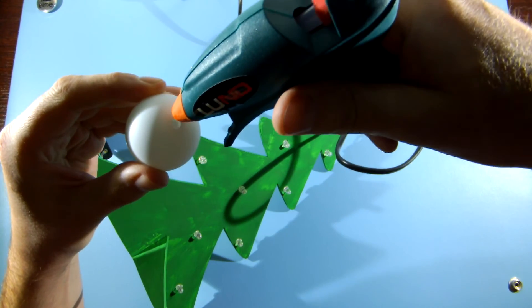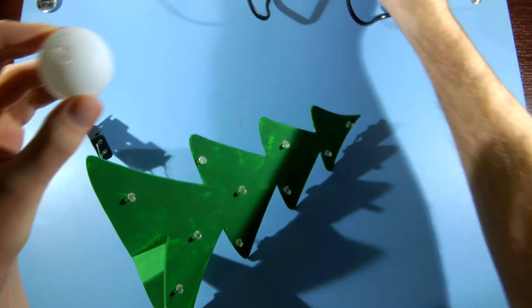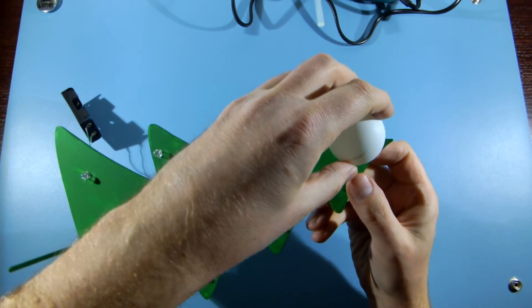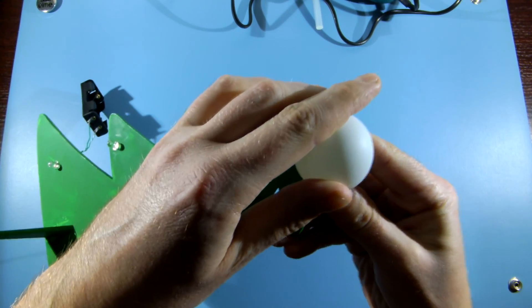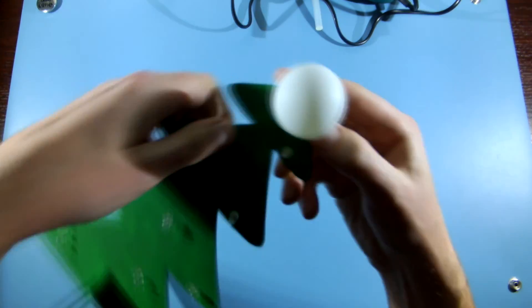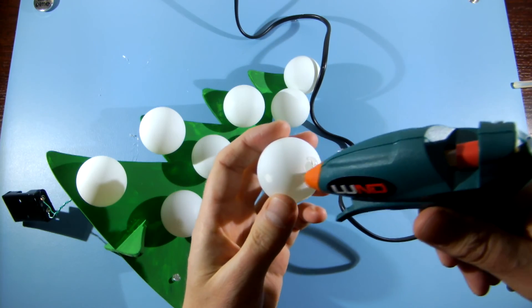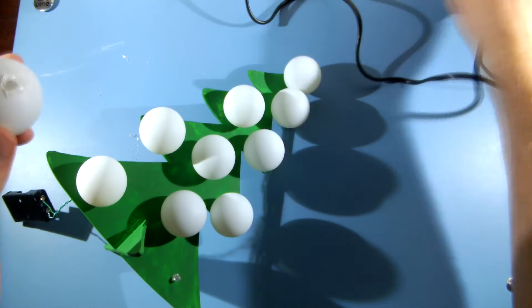Apply some hot glue around the hole and press the ball to our tree, so the LED goes into the hole. Wait a few seconds until the glue dries. Do the same with the rest of the balls.